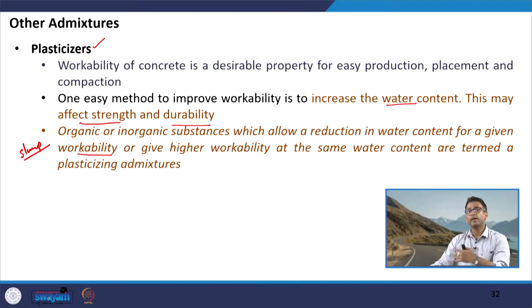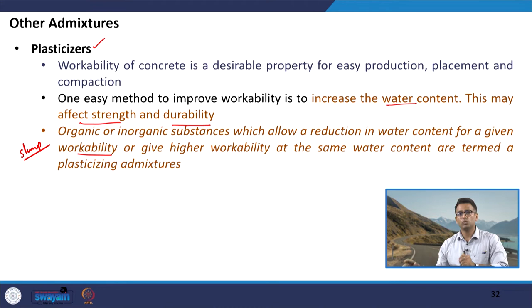We have other materials, either from organic or inorganic origin, which allow us to reduce the water content for a given workability criteria. This workability criteria can be defined in terms of slump of the final concrete mix. These materials allow us to reduce the water content for a targeted slump, or they can give higher slump for a given water content. These materials are termed plasticizing admixtures.